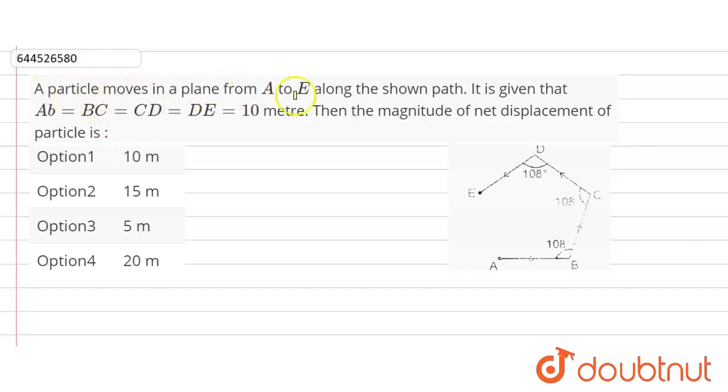A particle moves in a plane from A to E along the shown path. It is given that AB is equal to BC is equal to CD is equal to DE is equal to 10 meters. Then the magnitude of net displacement of the particle.